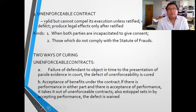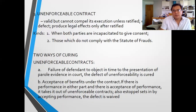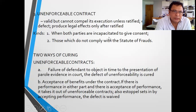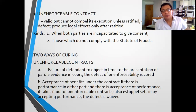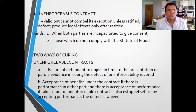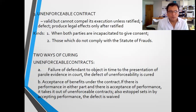The third kind of defective contract is an unenforceable contract. An unenforceable contract is valid, but cannot compel its execution unless ratified. It has an extrinsic defect and produces only legal effects after being ratified. The cure for an unenforceable contract is ratification, while the cure for a voidable contract is confirmation.